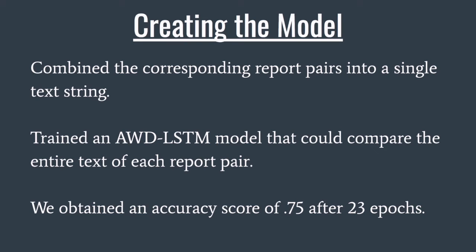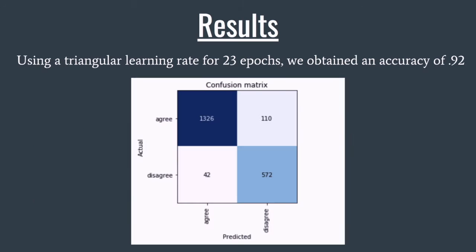After training for 23 epochs, we obtained an accuracy score of 0.75, which is quite good for a language model. Next, using our pre-trained language model, we trained an AWD LSTM classifier for 23 epochs with a triangular learning rate and obtained an accuracy of 0.92.